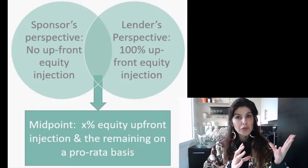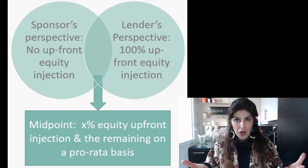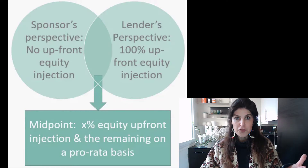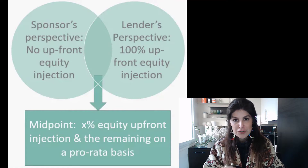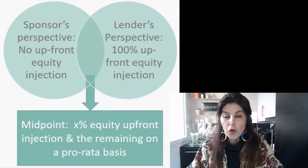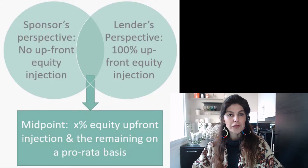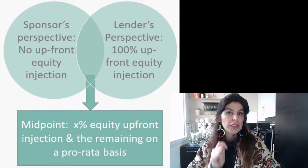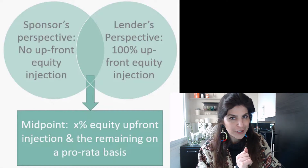From the sponsor's point of view, they would like no upfront equity injection. Lenders, on the other hand, want some skin in the game — some commitment from equity — so from their perspective, 100% full equity upfront is preferred. The middle ground during negotiation is a percentage requirement from lenders for equity upfront, with the remaining pro rata. As my mom always says: you need to invest something in order to be invested in it — that's the main reason behind the upfront equity injection requirement.